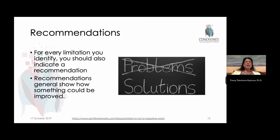For example, if you realize that the scope of your study only looked at kids in second grade, and you realize that's a limitation because you can't generalize it to all primary school kids, then you could mention in your recommendations that in the future you hope further research can be done to extend to all primary school grades. That basically is how you write your conclusions.